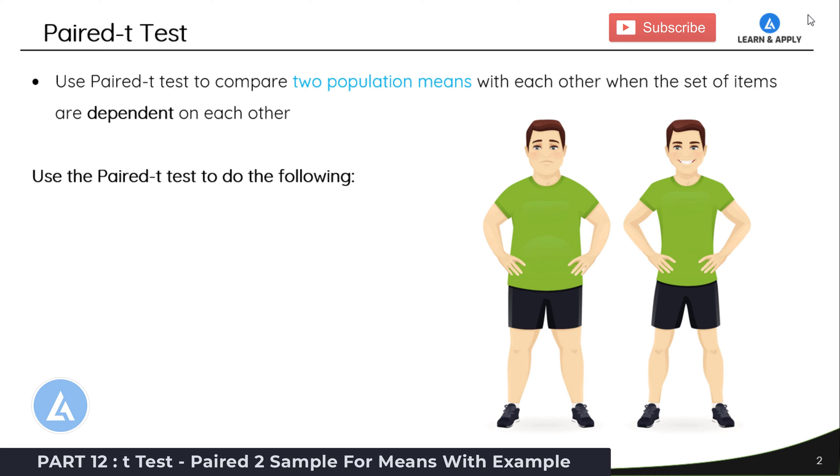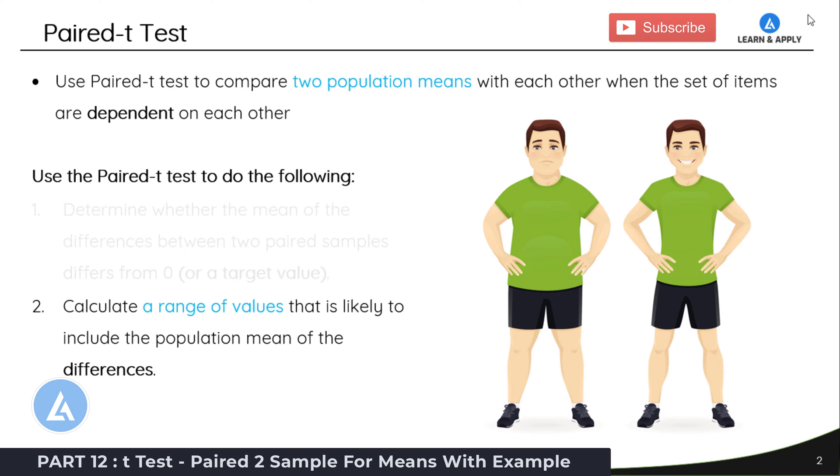The Paired t-Test is used in the following conditions. One, to determine whether the mean of differences between two paired samples differ from zero, or in other words, whether they differ from the target value. And the second application is to calculate a range of values that is likely to include the population mean of differences.